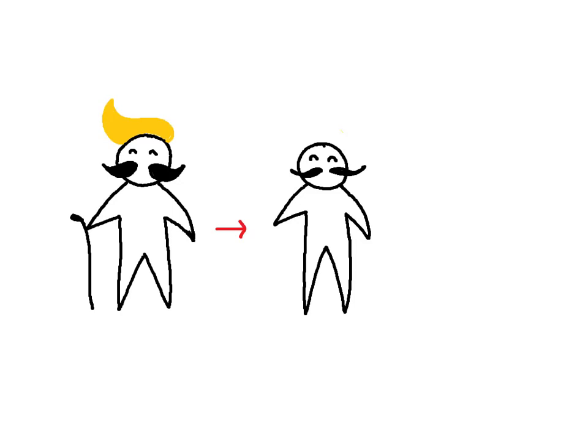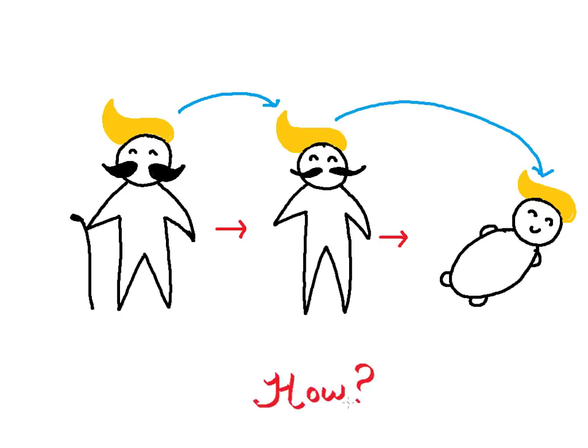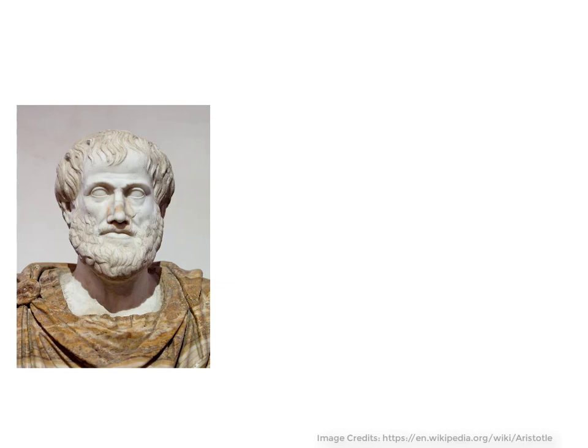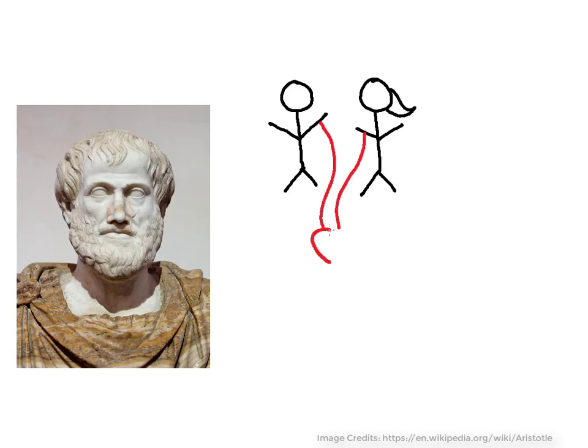Even in prehistoric times, humans realized that they transmitted likeness or similarity to their children, children to their grandchildren, and so on. But exactly how that happened was not clear. And Aristotle around 350 BC suggested that this likeness was carried in the blood by men and women. No wonder humans spilled so much blood over lineage. In the next 2000 years, little progress was made in this domain.